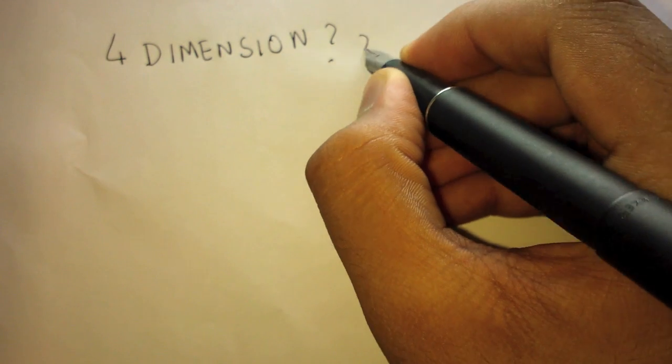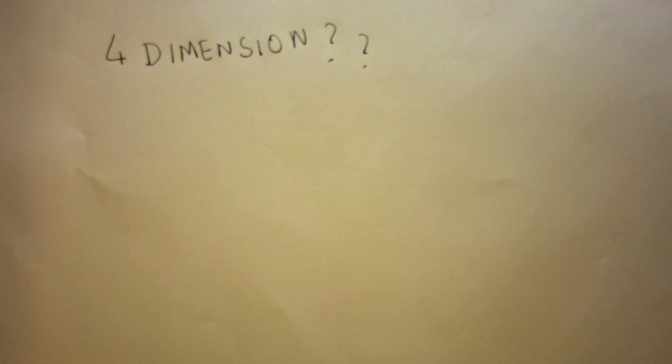First of all, what is four dimension? Four dimensional dimensions is a coordinate system with three spatial dimension and one time dimension.